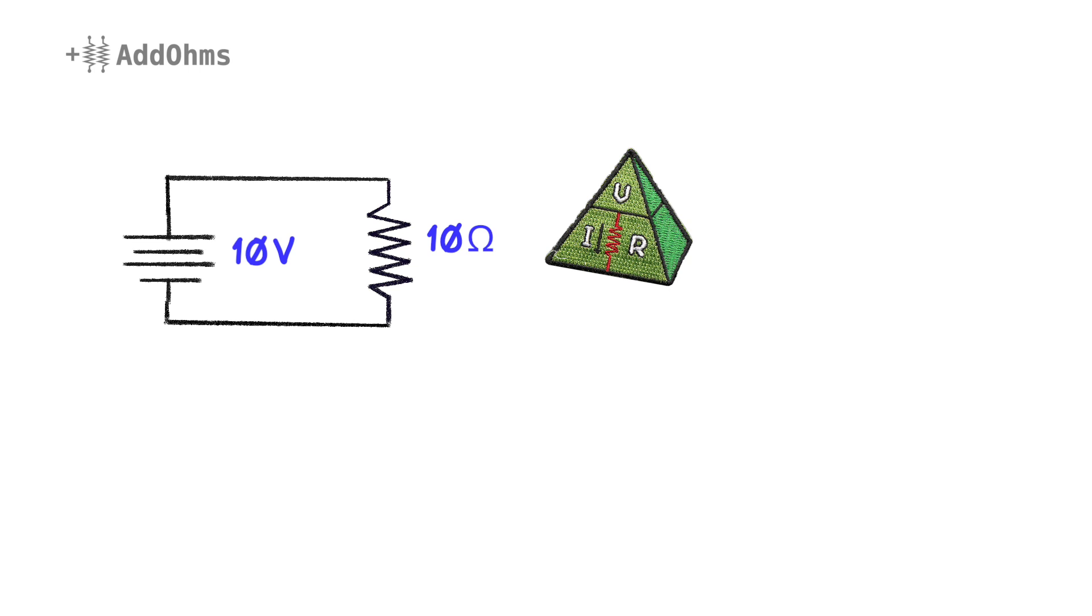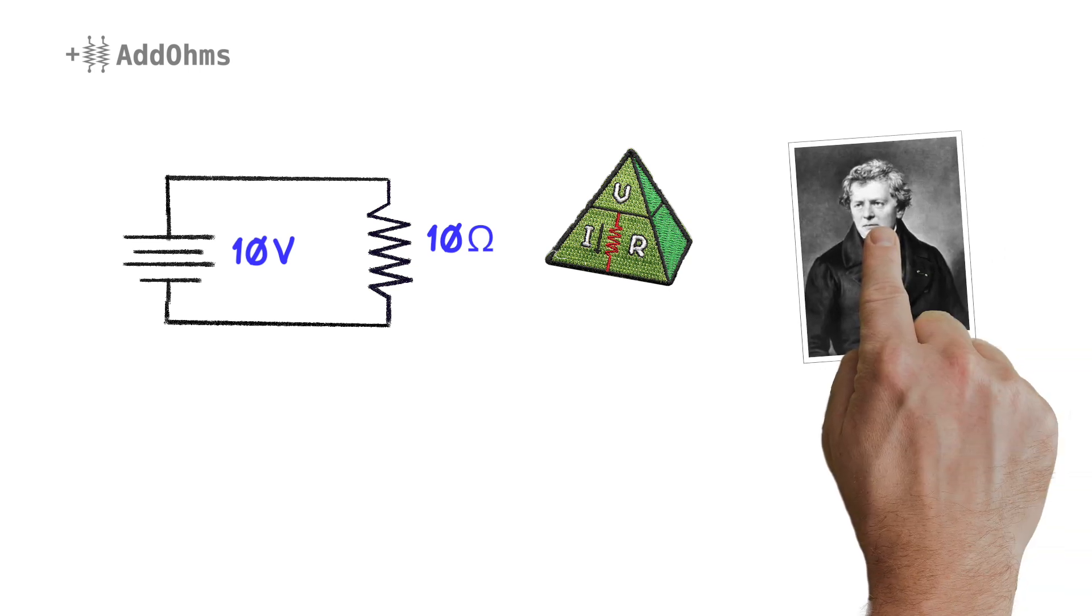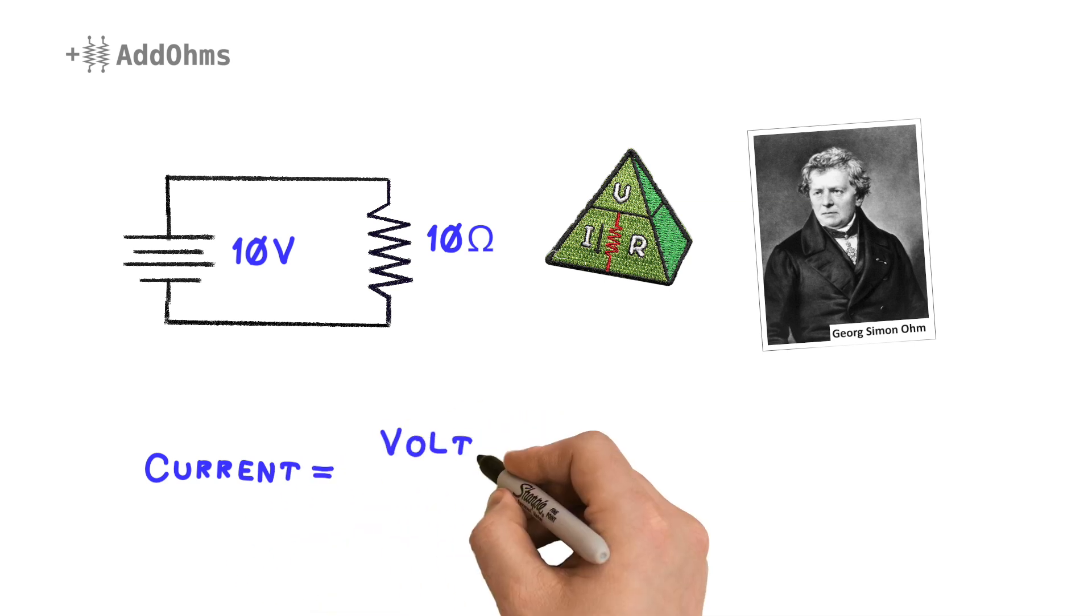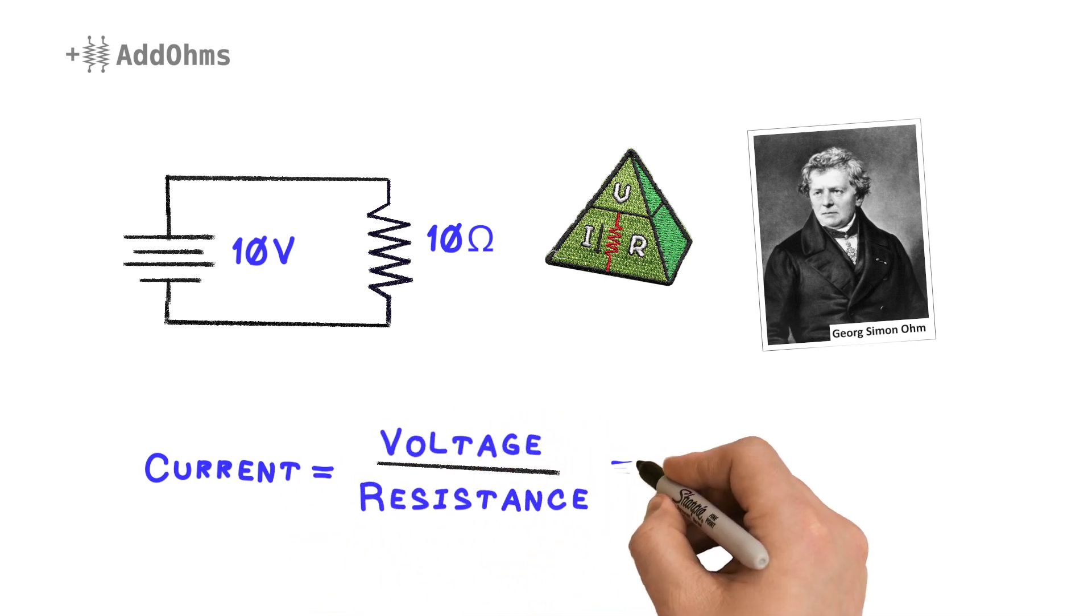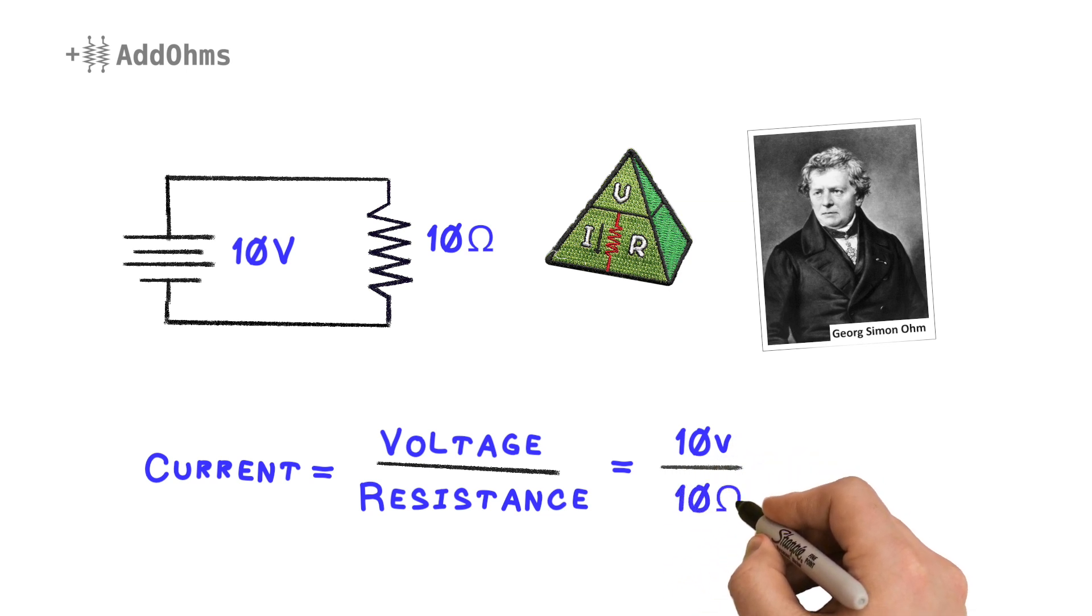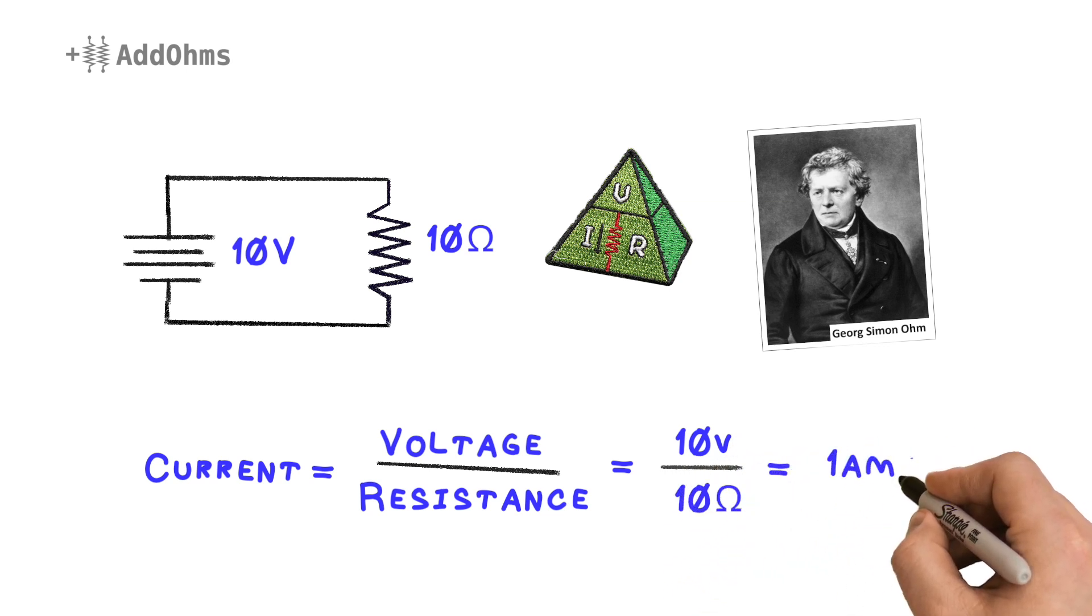Ohm's Law tells us how much current will flow through the circuit. According to Mr. Georg Ohm, current is equal to voltage divided by resistance. In this case, that's the battery's 10 volts divided by the resistor's 10 ohms, which gives us 1 amp of current.